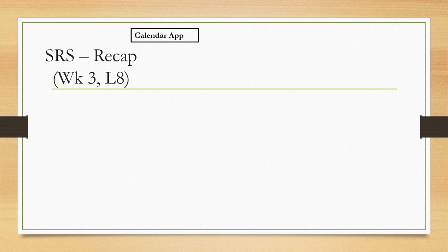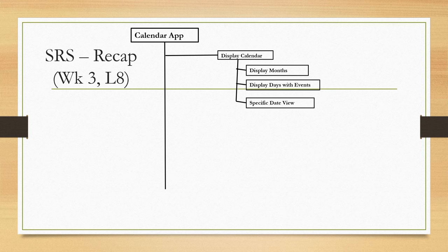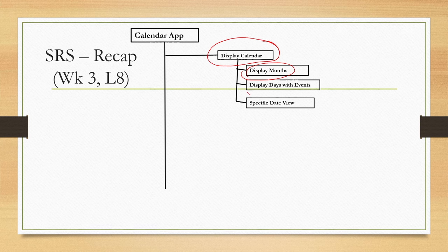Particularly in lecture number 8, in the third week, we went through this SRS document. It contains several functional requirements arranged in a hierarchy. The top level function 'display calendar' has three sub-functions: display months, display days with events, and specific date view.